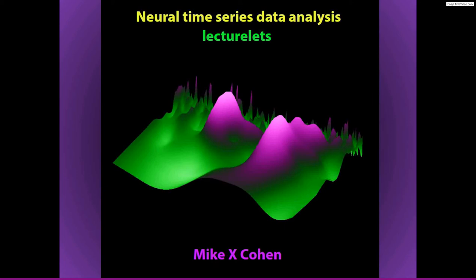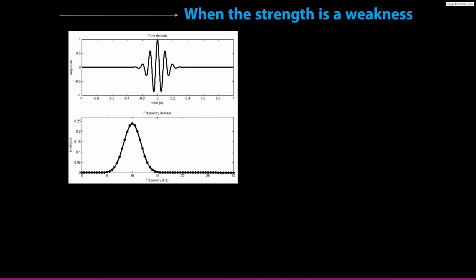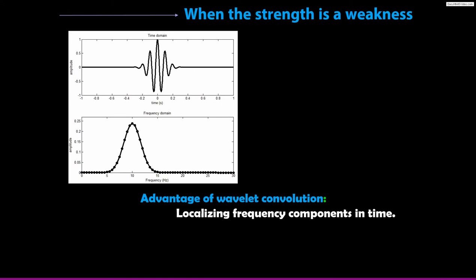You know now about time-frequency decomposition via complex Morlet wavelet convolution. One of the main advantages of using complex Morlet wavelets for time-frequency decomposition of neural time series data is that it has very good temporal precision. Wavelet convolution is very good at localizing frequency characteristics in time, with arguably the highest precision you can get with time-frequency analysis methods.